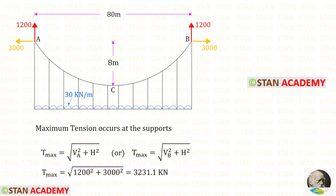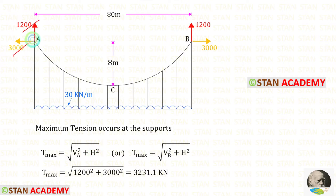Now let us find the maximum tension. We know that maximum tension occurs at the supports and the formula is: T_max = √(VA² + H²). We have found VA and H, so applying them, the maximum tension is 3231.1 kilonewtons.